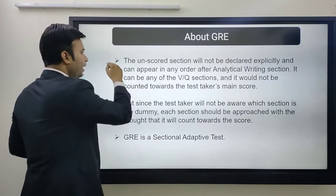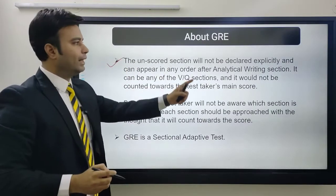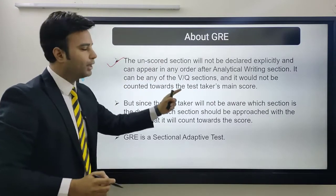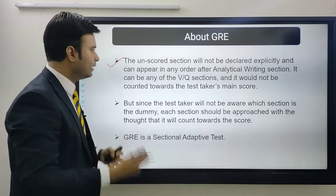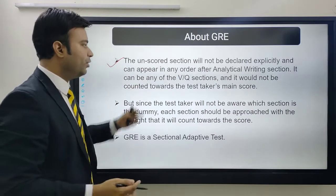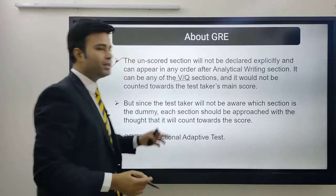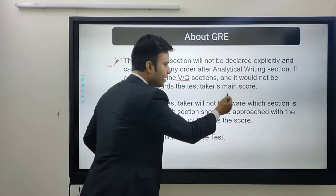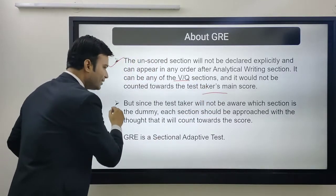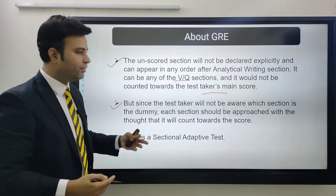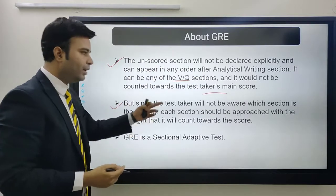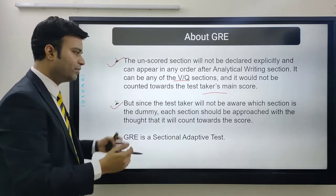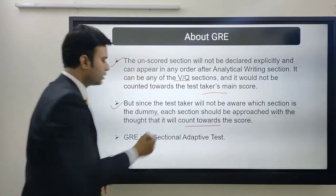The unscored section will not be declared explicitly and can appear in any order after the analytical writing section. It can be any of the verbal or quant sections and will not be counted towards the test taker's main score. Since the test taker will not be aware which section is the dummy, each section should be approached as if it counts towards the score.